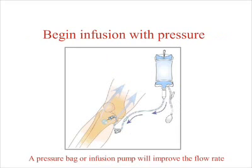Now that you've placed and confirmed the EZIO AD catheter's position and attached a primed EZConnect, it's time to begin your infusion. Remember that the EZIO catheter must be flushed with 10cc's of fluid prior to administration. Once you begin your administration, flow rates will be vastly improved with a pressure bag or infusion pump.